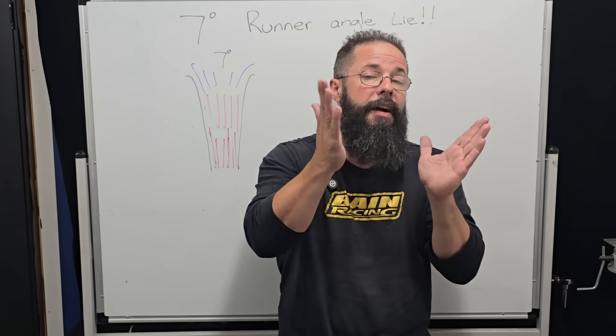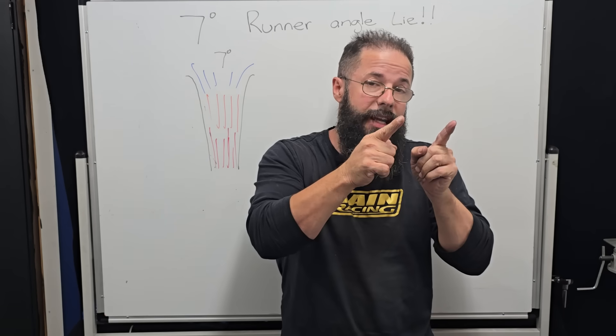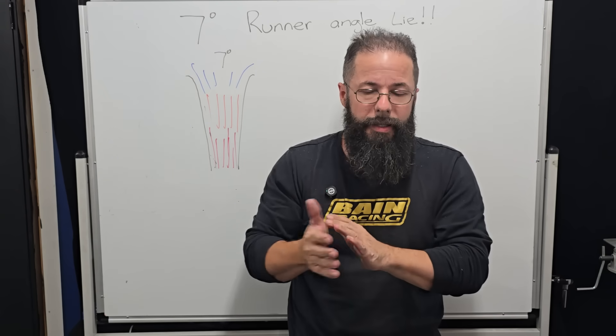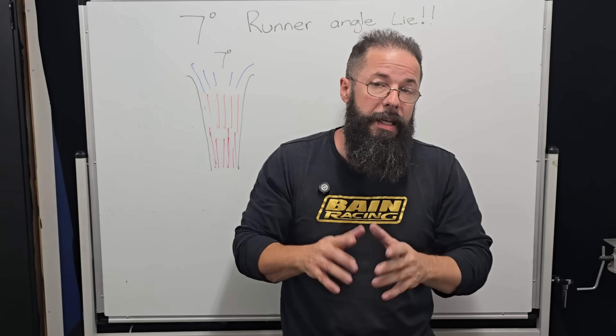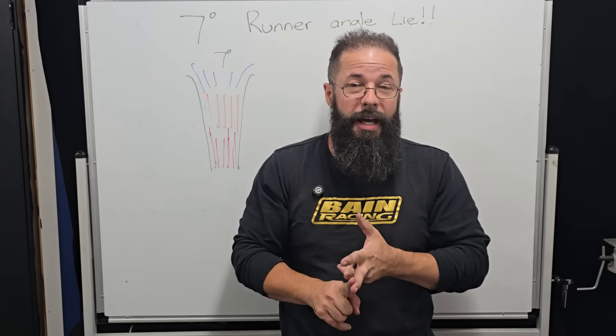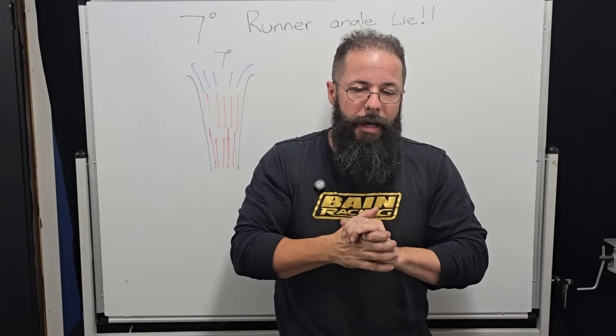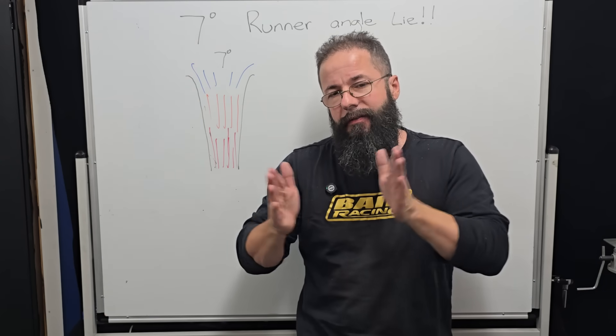Then the runner is naturally going to have to have more taper because we need to slow the airspeed down in the runner to compensate for the higher airspeed in the port, or too high airspeed. And vice versa, if we've got a cylinder head that is too big, the valves a little big, the MCA is a little big, then we can close that runner up.